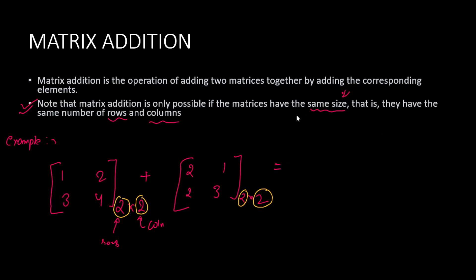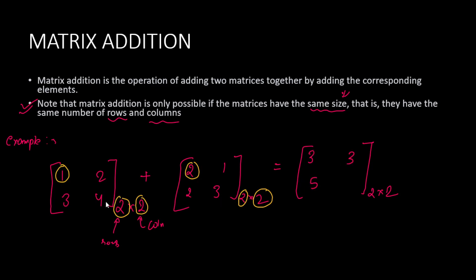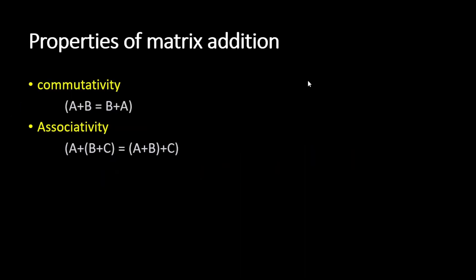This condition is satisfied, so we can add them. After adding, we will obtain a 2×2 matrix. We add the corresponding elements: 1+2=3, 2+1=3, 3+2=5, and 4+3=7. So by this way, we perform matrix addition. Now let's move to our next topic — the properties of matrix addition.